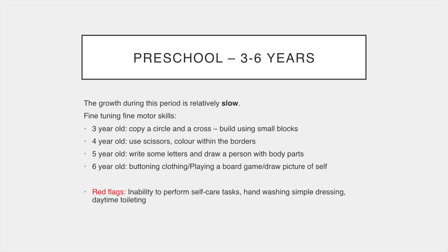Moving into the preschool years, three to six years of age, the growth during this period is relatively slow. Children are mainly fine-tuning their fine motor skills. A three-year-old can copy a circle and a cross and build using small blocks. A four-year-old can start to use scissors and colour within the borders of a picture. A five-year-old can start writing some letters and draw a person with body parts. A six-year-old is buttoning clothing and playing board games. Red flags include inability to perform self-care tasks such as hand washing, simple dressing or daytime toileting. These developmental tasks are socially desirable and mostly linked to independence at school.